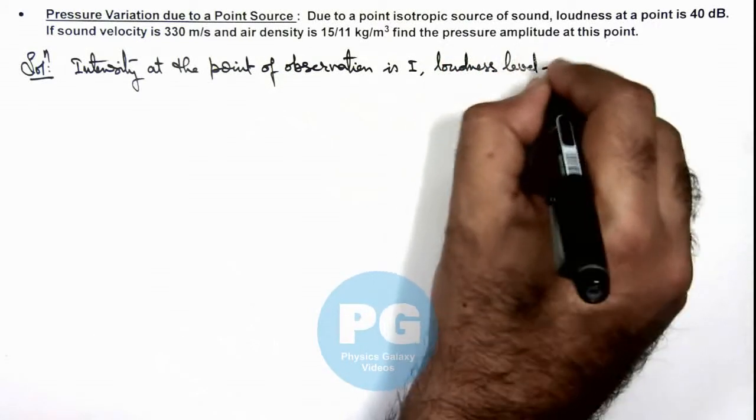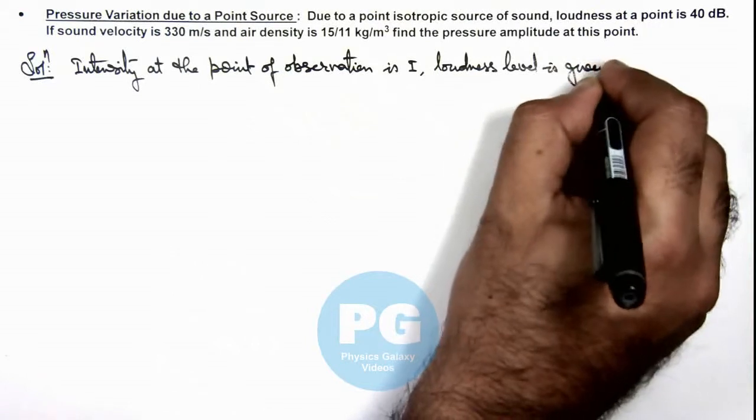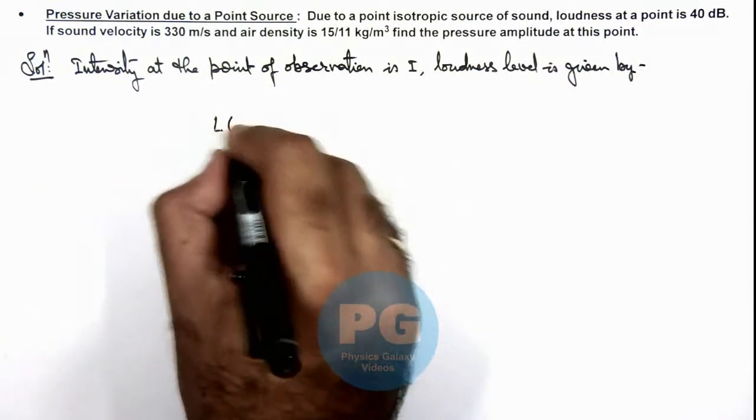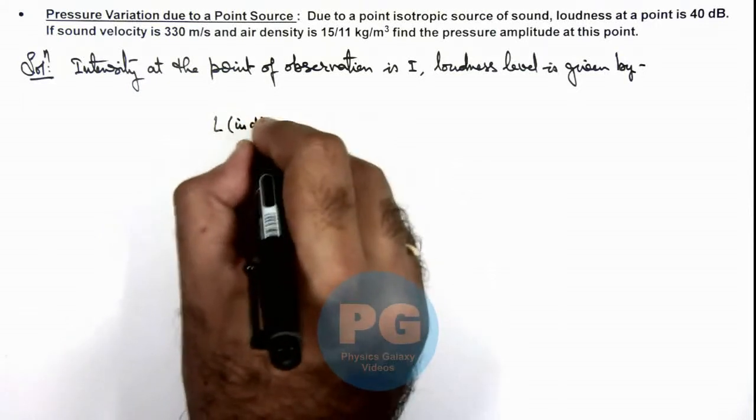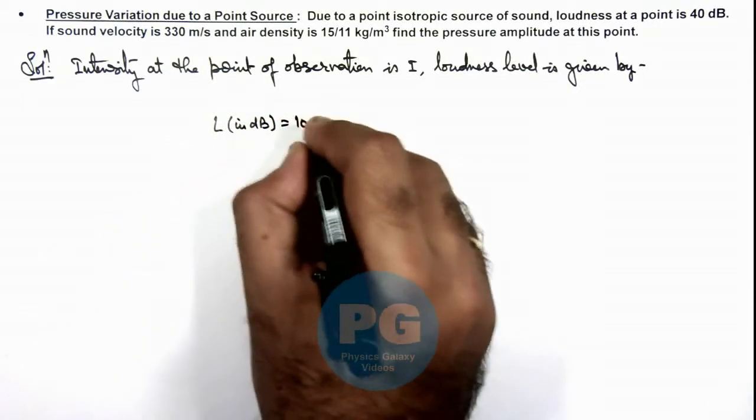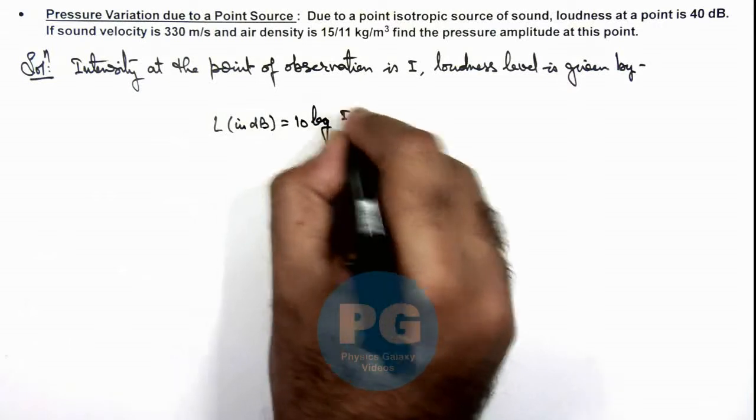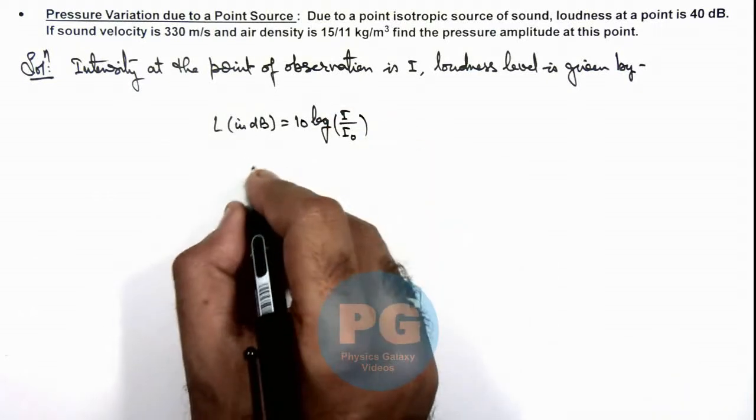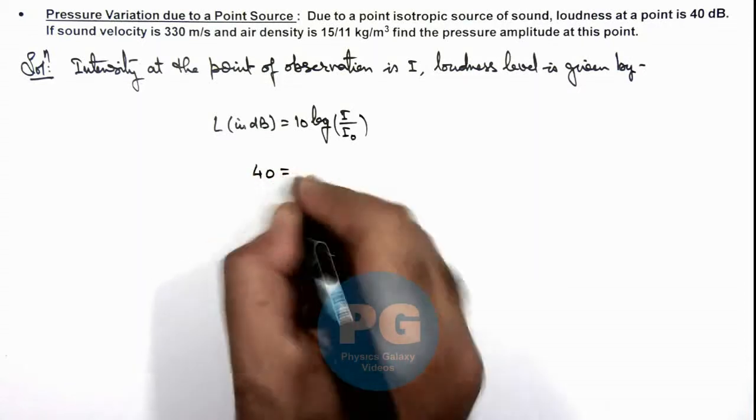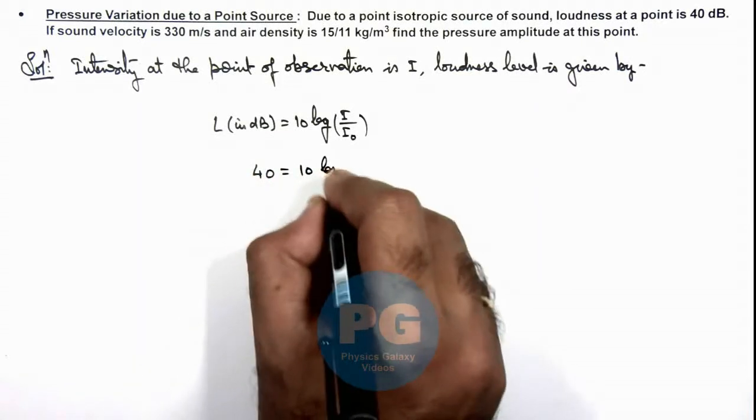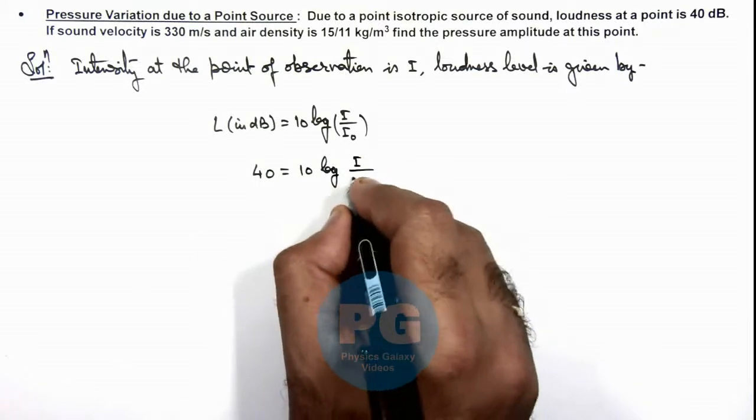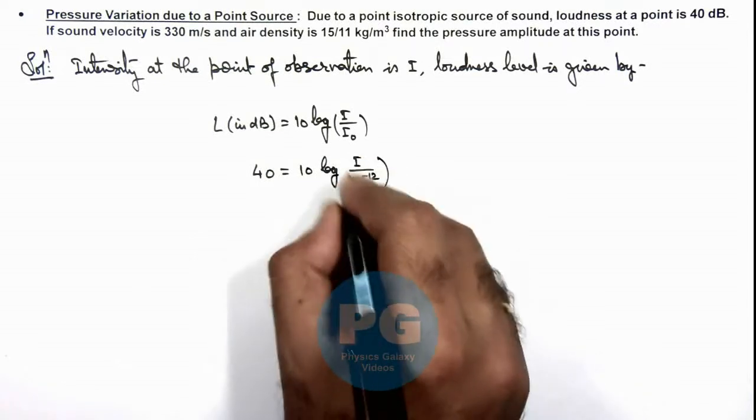Loudness level in decibel can be directly given as 10 log of I by I₀. In this situation loudness level is given to us as 40 dB, which is 10 log of I by I₀, where I₀ is 10 to power minus 12 watt per meter square.